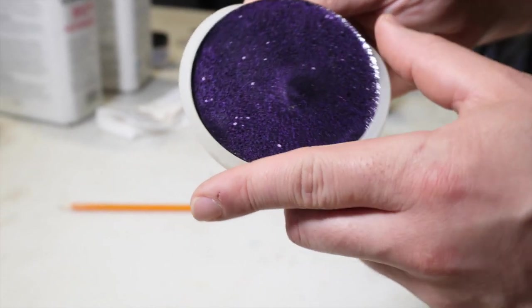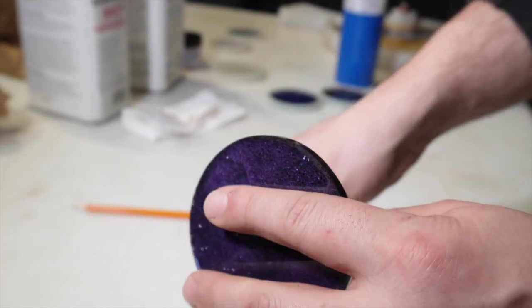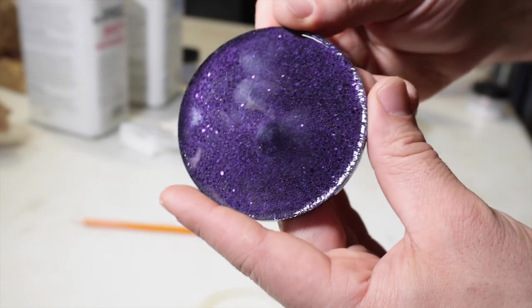Here's a second example using the black pearl and ghost violet to create that deep, dark purple color. Again, here you can see little white specks, and that's caused from not mixing thoroughly enough before we poured.